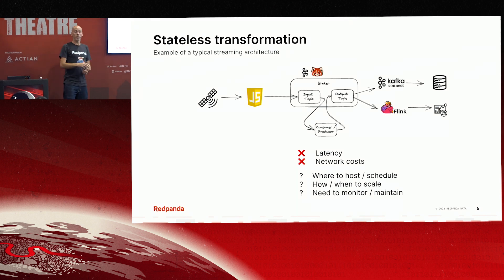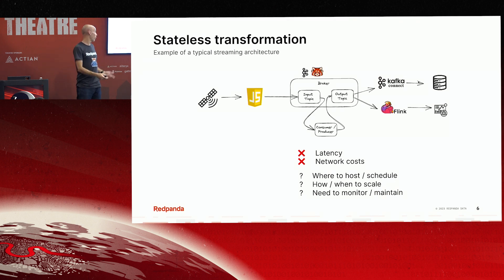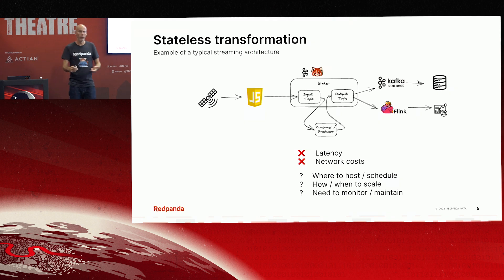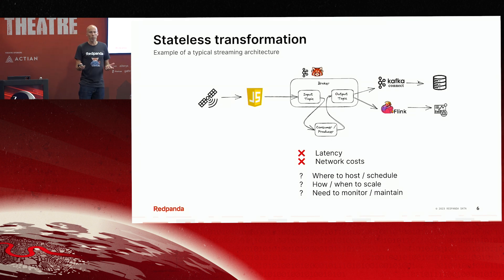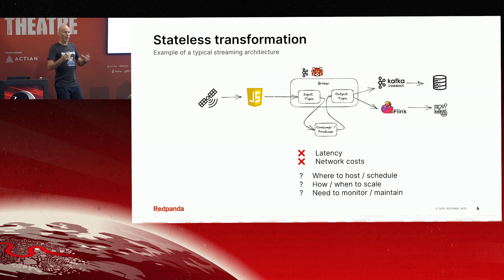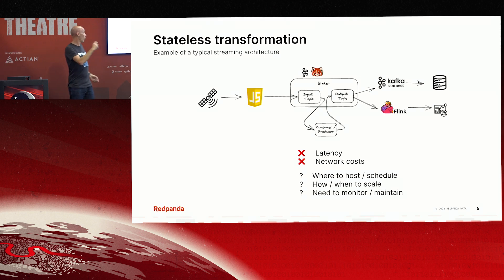The downside of this approach is we're introducing latency into the system — that little piece of code consuming and producing is latency — and potentially network costs depending on where you host it. You've then got a whole load of operational considerations: what are we going to write it in, where are we going to host it, how are we going to schedule it, make sure it's running, monitor and maintain it, patch it, manage dependencies. That makes what should be a very simple format conversion into an operational headache. In a typical environment you might have dozens or hundreds of these little micro consumer-producers to manage, which we call data ping pong — moving data backwards and forwards between the broker just to do small pieces of transformation.